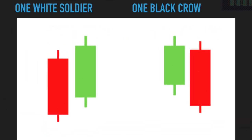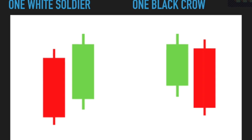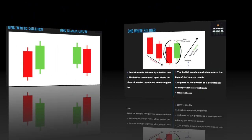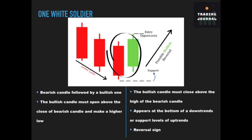Moving from pin bars, we are going to look at one white soldier and one black crow. The one white soldier appears at the bottom of downtrends or at the support levels of uptrends. It consists of two candlesticks that begin with a bearish candle followed by a bullish one. There are two rules: the bullish candle must open above the close of the bearish candle and make a higher low. Also, the bullish candle must close above the high of the bearish candle. There is a high chance that the price will go up.